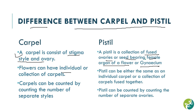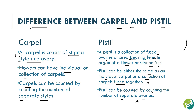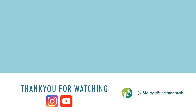Flowers can have individual or a collection of carpels. A pistil can be either the same as an individual carpel, or a collection of carpels fused together — that is, a compound ovary or compound pistil. Carpels can be counted by counting the number of separate styles, whereas pistils can be counted by counting the number of separate ovaries. When we count the ovaries we find the number of pistils, and when we count the styles we find the number of carpels. I hope this difference is clear for you.